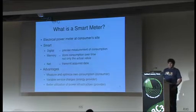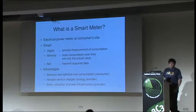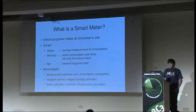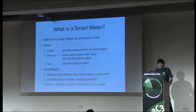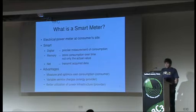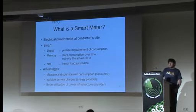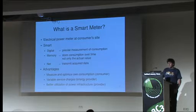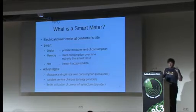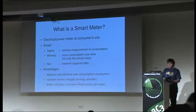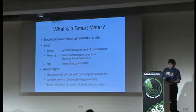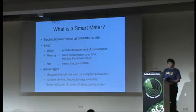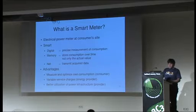So what is a smart meter? A smart meter is an electrical power meter at the consumer side — it's down in your cellar and it measures power consumption. It is smart because it is digital, more precise, and can measure consumption very precisely. It has a memory, so it can store consumption over time — not just one value at year's end, but throughout the whole period. It also has a network connection so it can transmit the acquired data remotely.